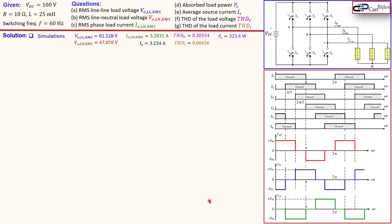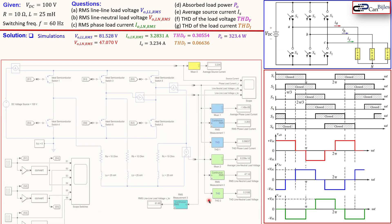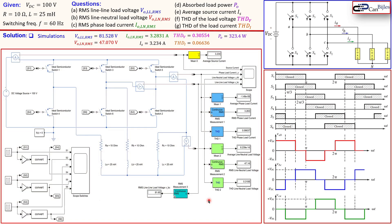Now let's go to the simulation results. This is the circuit in Simulink — you can see the six switches, the 100 V DC voltage source, and pulse generators to create the switching scheme we discussed. The three loads (R-L, R-L, R-L) are connected for phases A, B, and C, with a scope to capture the results.